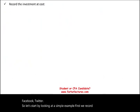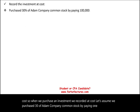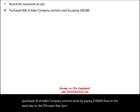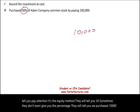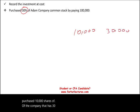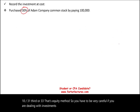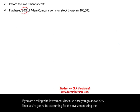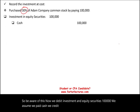First, we record the investment at cost. So when we purchase an investment, we record it at cost. Let's assume we purchased 30% of Adam Company common stock by paying $100,000. On the CPA exam, they don't tell you it's the equity method — they tell you 30%, or sometimes they say we purchased 10,000 shares of a company that has 30,000 shares outstanding. You have to understand that 10 divided by 30 is one third, or 33% — that's the equity method. So we debit Investment in Equity Securities $100,000 and credit Cash $100,000. Very simple.